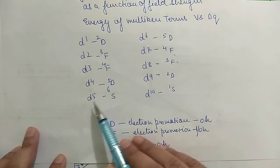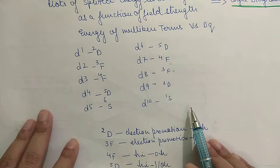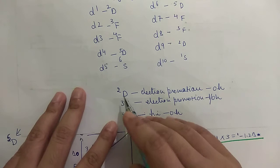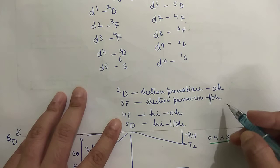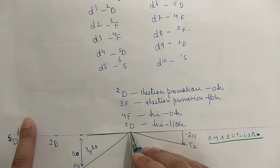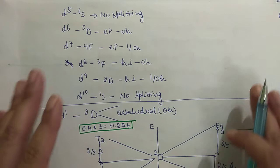For d4 it is 5D, d5 is 6S, for d6 we have 5D, d7 is 4F, d8 is 3F, d9 is 2D, d10 is 1S. For 2D there is electron promotion and octahedral splitting. For 3F there is electron transition and anti-octahedral splitting. For 4F there is hole inversion and octahedral splitting. For 5D there is hole inversion and anti-octahedral splitting.